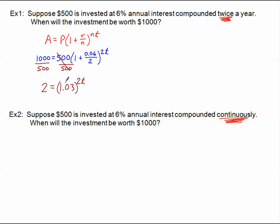Now, I can take the common log of both sides, or the natural log of both sides, or in this case, I might take the log base 1.03 of both sides. Maybe I just convert this out of exponential and into logarithmic form. I'm going to rewrite this as the log base 1.03 of two is equal to two t.